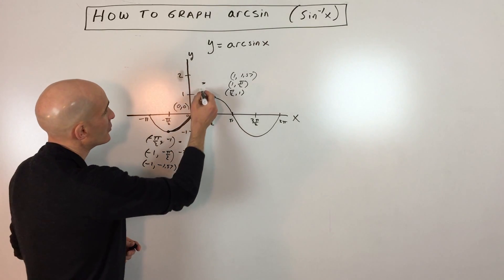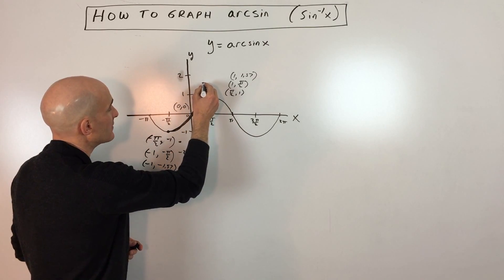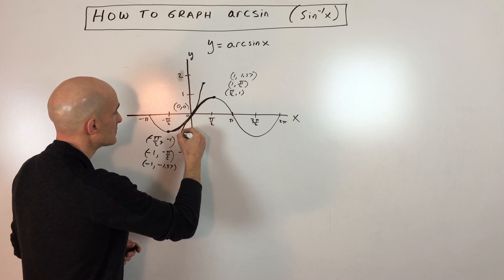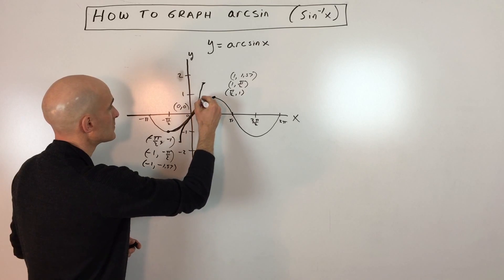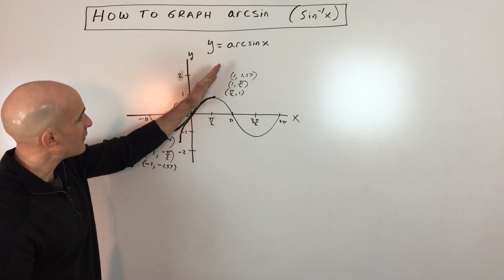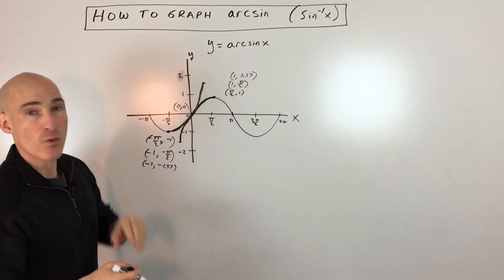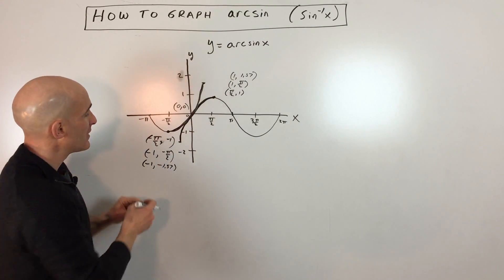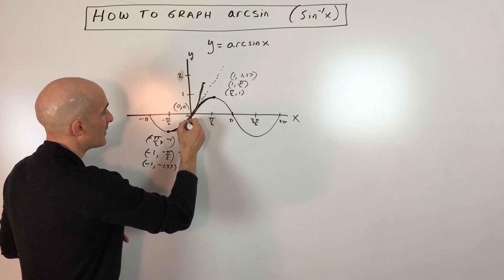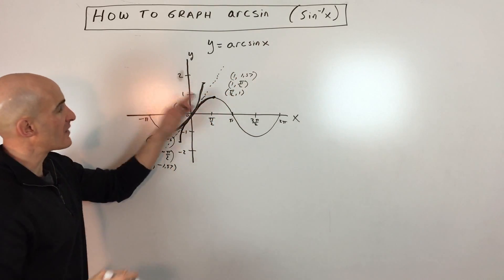Now when we graph this, the graph's going to look like this. One thing that you'll notice when you graph the inverse function, it's going to be a reflection over the line y equals x. So it's a line that has a slope of 1, like a 45-degree line, and it's going to be a reflection over that line.